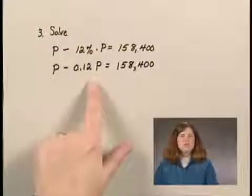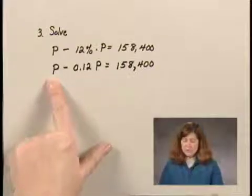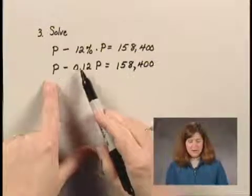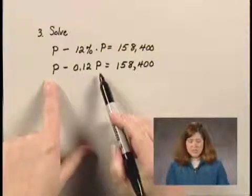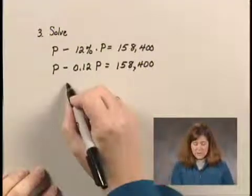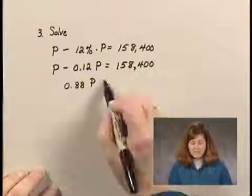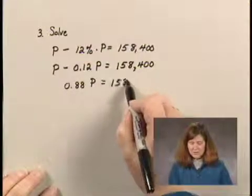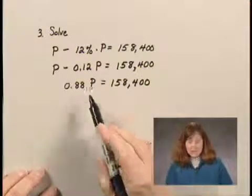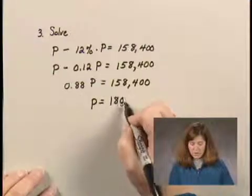Now, we have two terms that contain a P. We need to combine these terms. In order to remember how to combine them, think of this as 1 times P minus 0.12 times P. So, we have 1 minus 0.12, or 0.88P equals 158,400. Dividing both sides by 0.88, we get P equals 180,000.